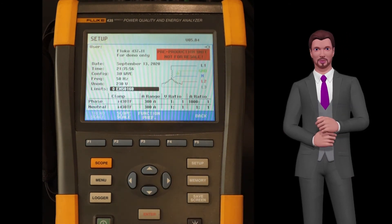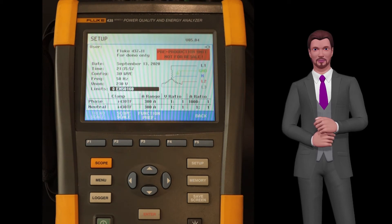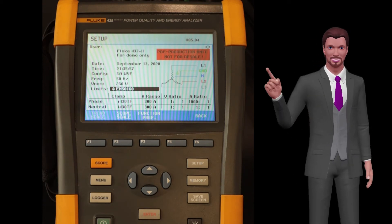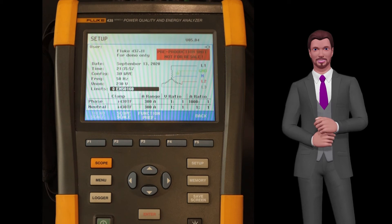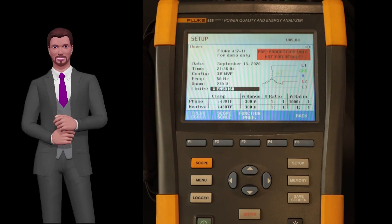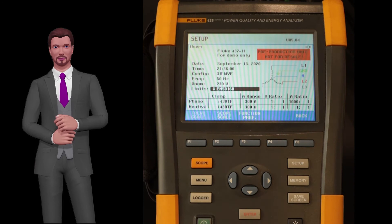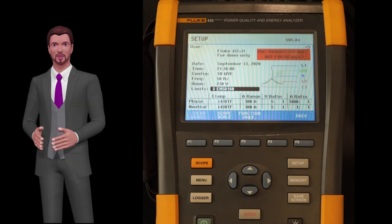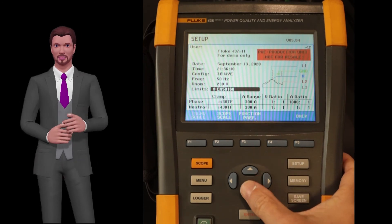In this way, the analyzer will automatically apply all the limits of the EN 5160 standard for the analysis of the power quality. We have almost finished the configuration of the power quality analyzer, but we still have a very important step, the configuration of the current and voltage probes.